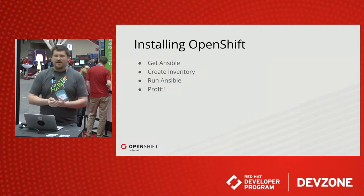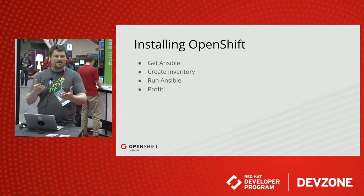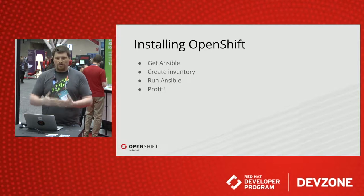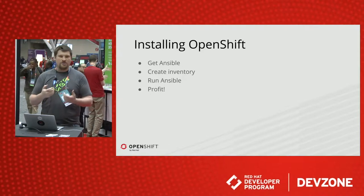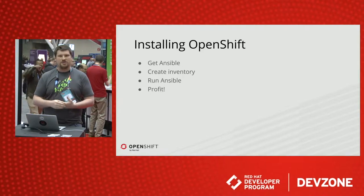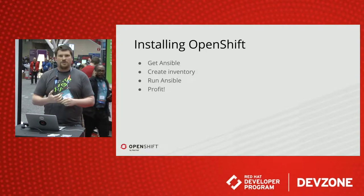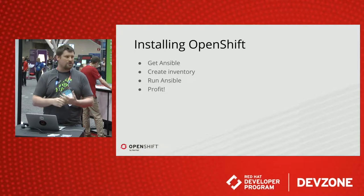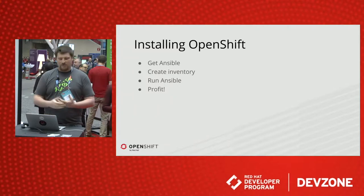So generally, I already expect you to know that you want to use Google Cloud, so I'm not going into any details about why you should choose it — that's your decision. The generic way to install OpenShift is that you need to install Ansible, because the official installation method is Ansible. Then you need to create the inventory file for Ansible so that Ansible knows how to connect to the machines and how to install everything. Then you run Ansible to do all the hard work, and then you can profit from that.